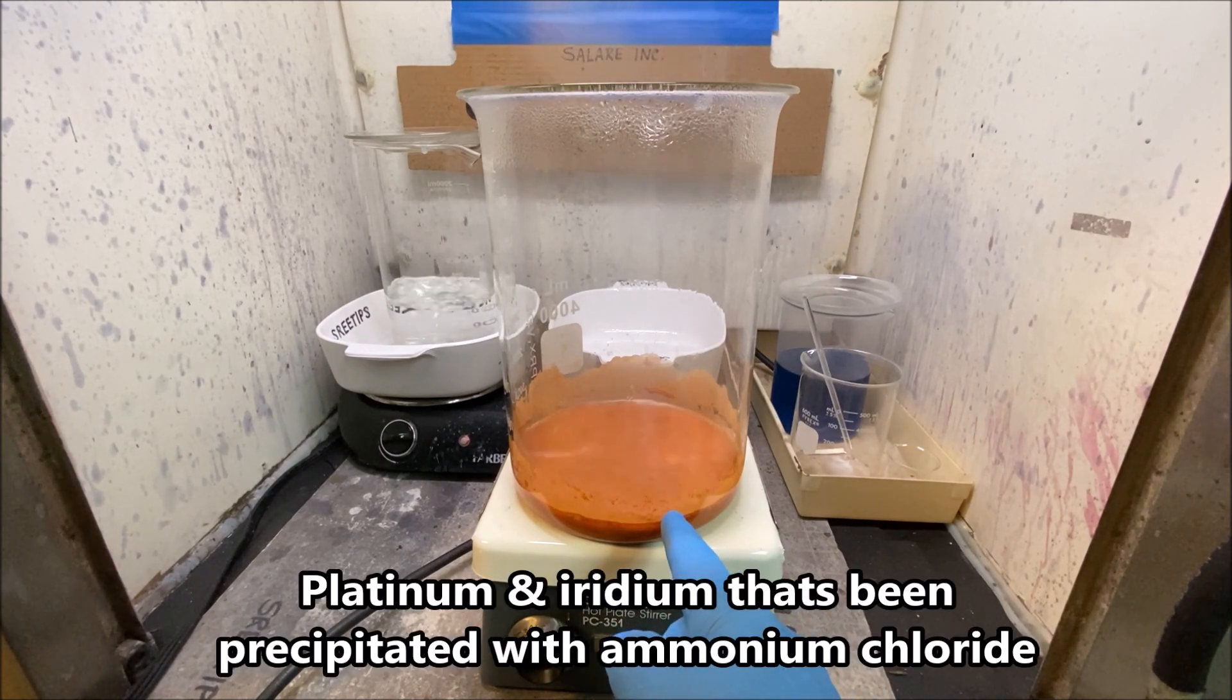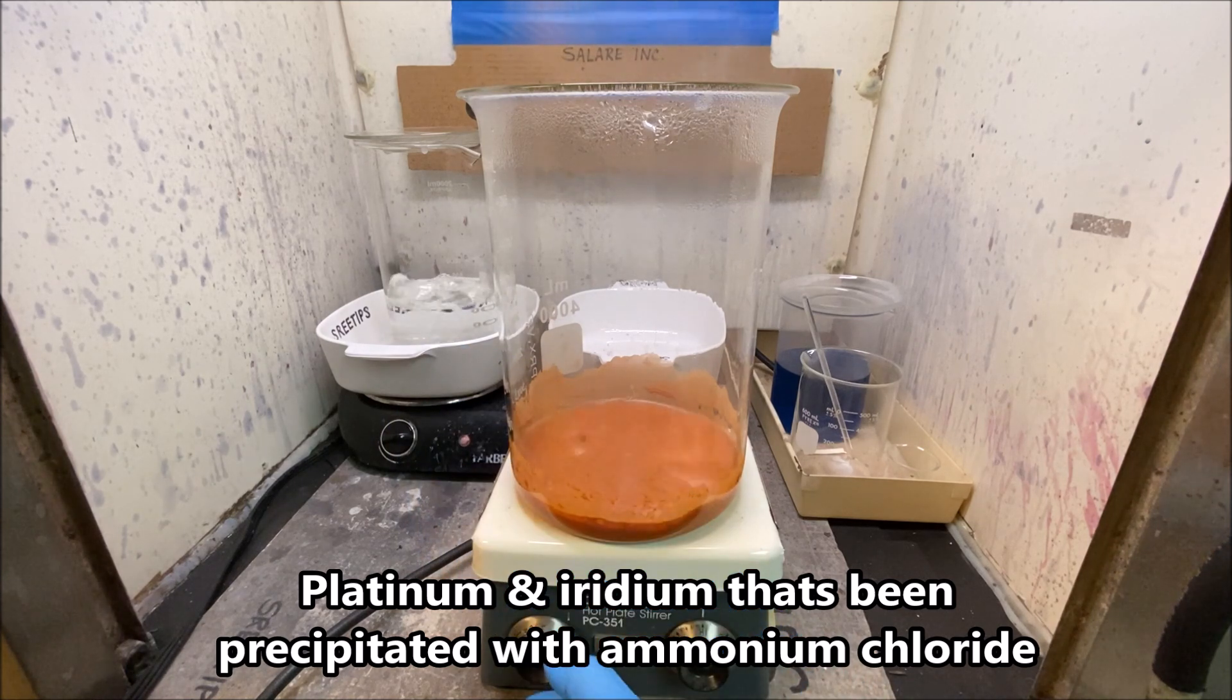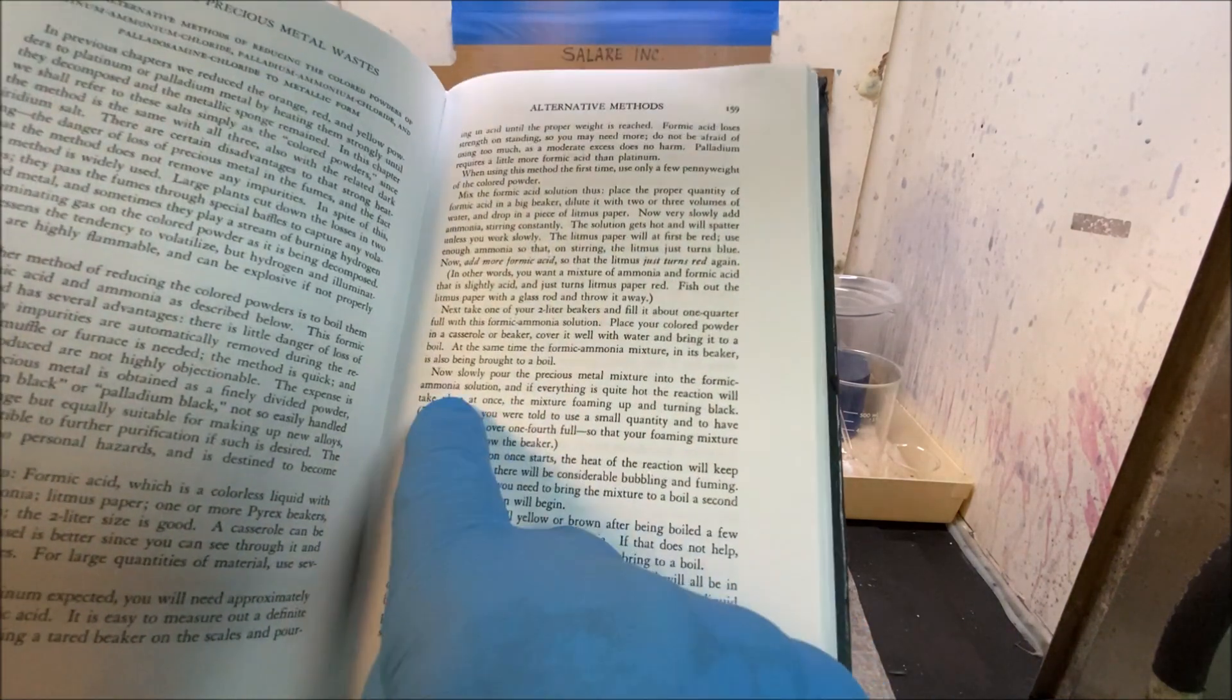As you can see, the solution is boiling here. The formic acid ammonia solution is boiling. I turn my stir bar on so I don't spatter a bunch of stuff here.